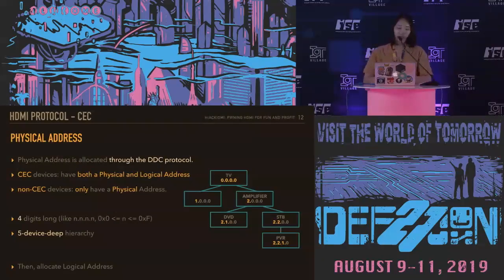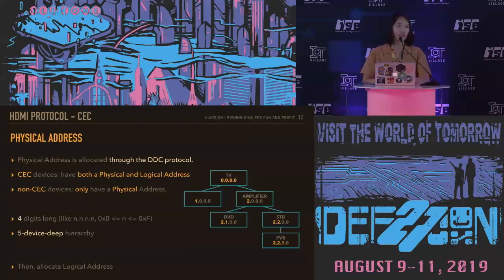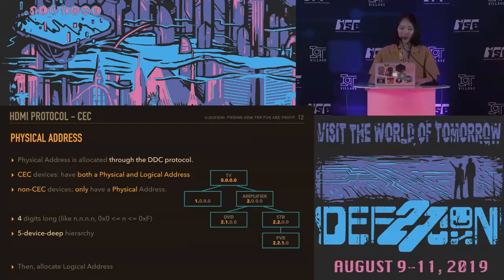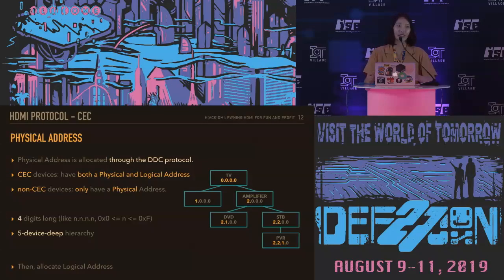In HDMI, there are two types of address: physical address and logical address. The address used by CEC messages is the logical address. However, CEC is a protocol based on a bus system, so it cannot alone ascertain the physical connectivity of the network. It uses the DDC protocol to allocate physical addresses to devices in the network. All CEC devices therefore have both a physical and a logical address, whereas non-CEC devices only have a physical address.